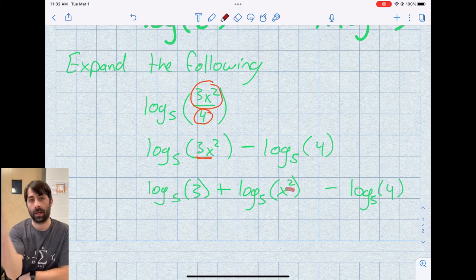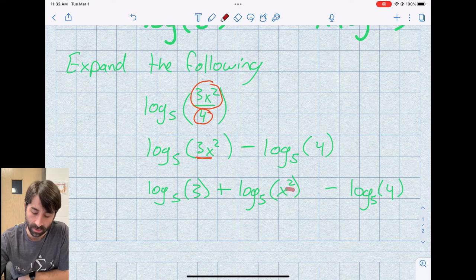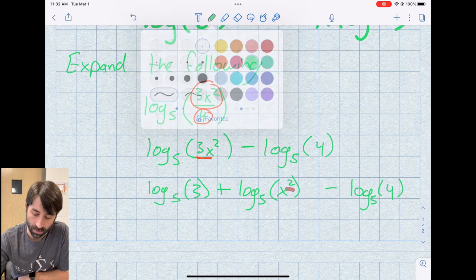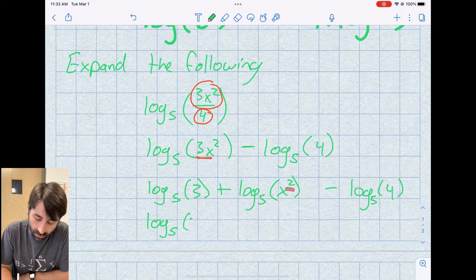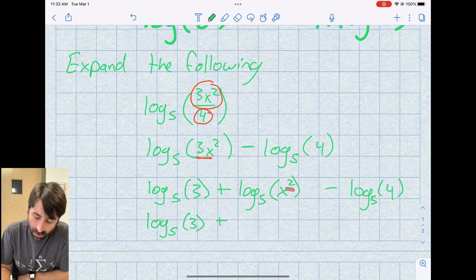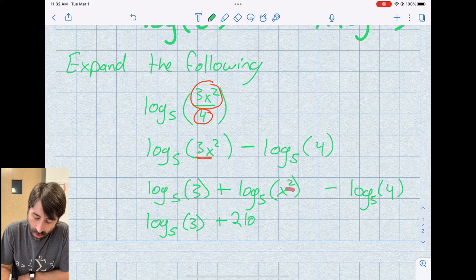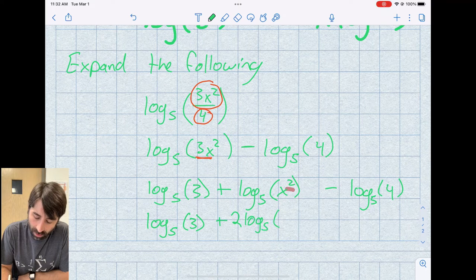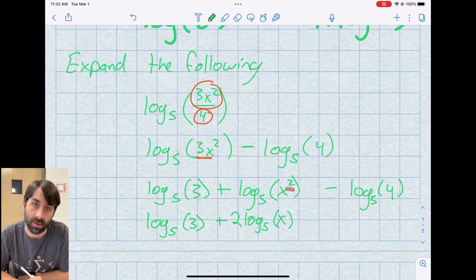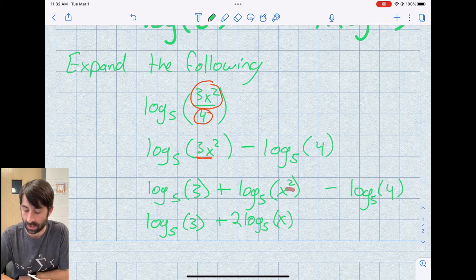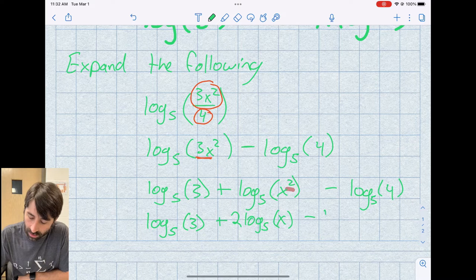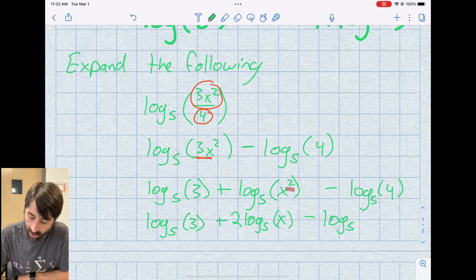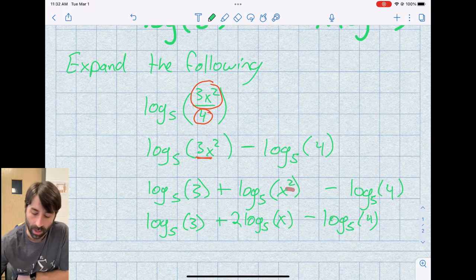Now, the last thing we got to take care of is our exponent, or our power in that second term. Now remember that comes down and turns into a factor. So if I apply these rules, my final answer would be log base five of three plus two log base five of x. Notice there's no power exponent inside that logarithm anymore. And now we have minus log base five of four.